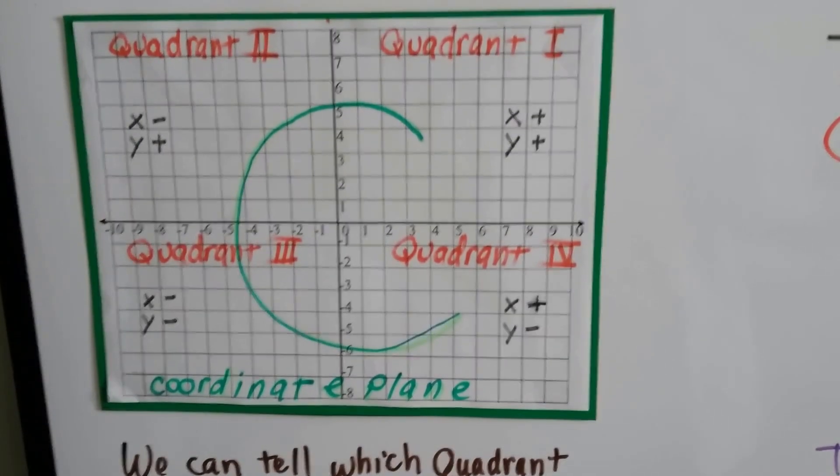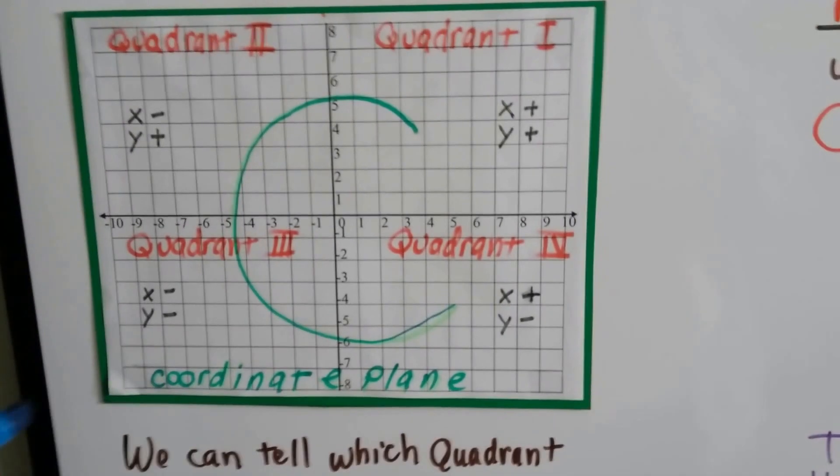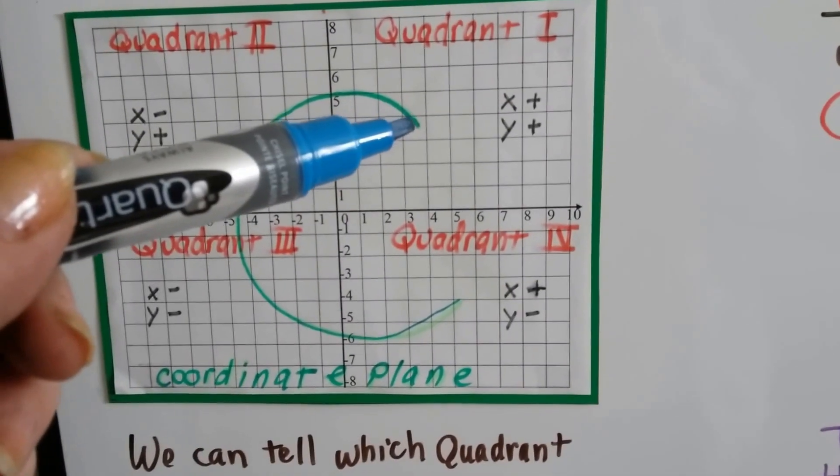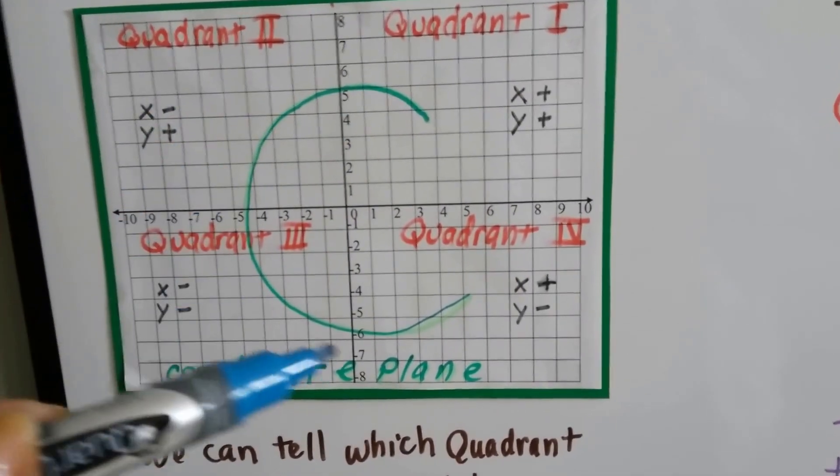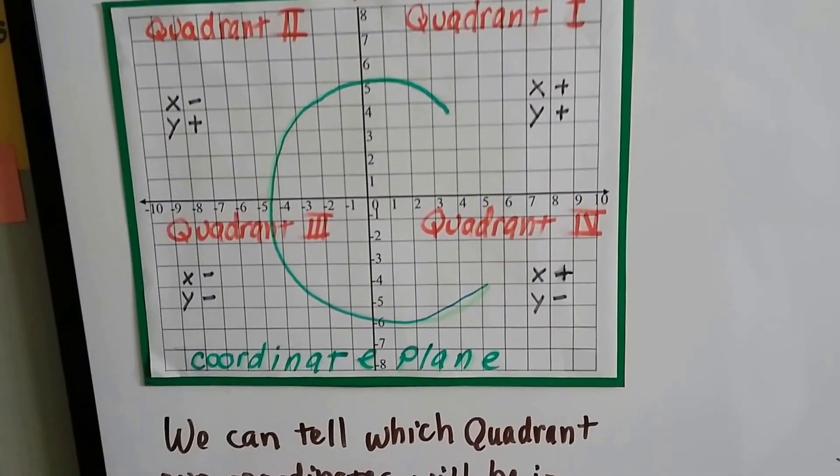So the way I tell anyone to remember it is, it's the shape of a c for coordinate, coordinate plane. It starts here at one, then two, then three, then four. So it's going counter-clockwise but it's in the shape of a c, isn't it, for coordinate.